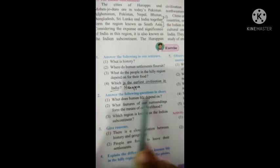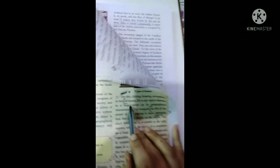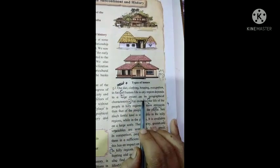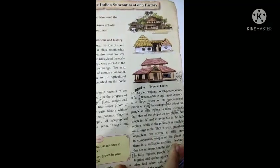Answer the following questions in short. What does human life depend on? Question 2.1. You will get it on page number 1. Here: All human life in any region depends to a large extent on its geographical characteristics. This is the answer of 2.1.